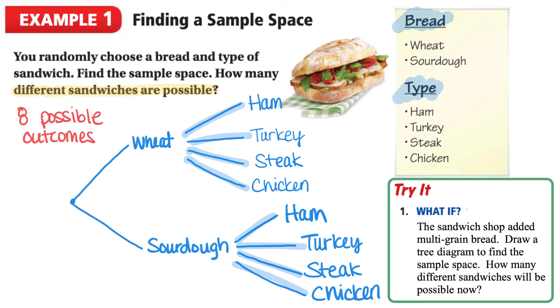Here is our first try question for this video. What if the sandwich shop added multigrain bread? Draw a tree diagram to find the sample space. How many different sandwiches will there be possible now?